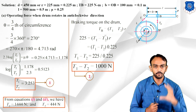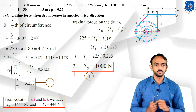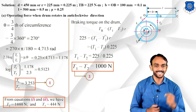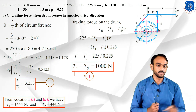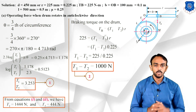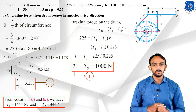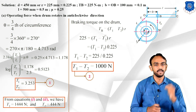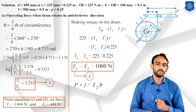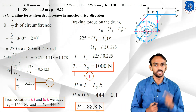Taking moments about pivot O: When the drum rotates anti-clockwise, T1 (tight side) passes through O so it contributes no moment. The moment equation is: P × l = T2 × b. Substituting: P × 0.5 = 444 × 0.1. Therefore P = 88.8 N when the drum rotates anti-clockwise.